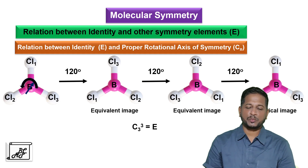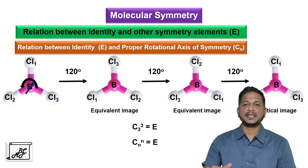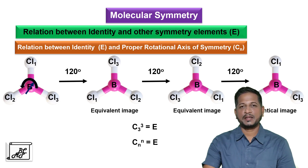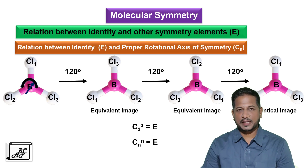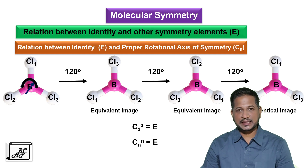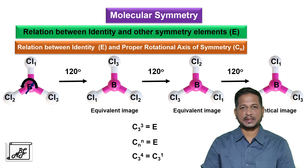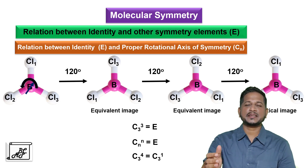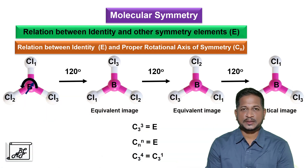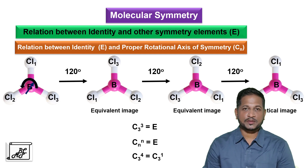In general, we can write CN raised to N is equal to E — that is, any rotational axis of symmetry, if rotated that same number of times, gives the identical image. There is also another relation established: C3 raised to 4 is equal to C3 raised to 1, since C3 raised to 3 cancels out. This is the relation between the identity element and the proper rotational axis of symmetry.